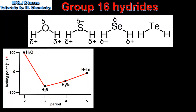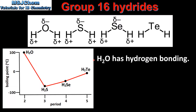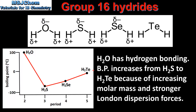To end the video we look at the boiling points of the group 16 hydrides. Starting with H2O, which has a boiling point of 100 degrees C. We then see a big decrease in boiling point to H2S, then the boiling point increases to H2Se and H2Te. The reason for the high boiling point of water is that it has hydrogen bonding between its molecules. The boiling point then increases from H2S to H2Te because of increasing molar mass and stronger London dispersion forces.